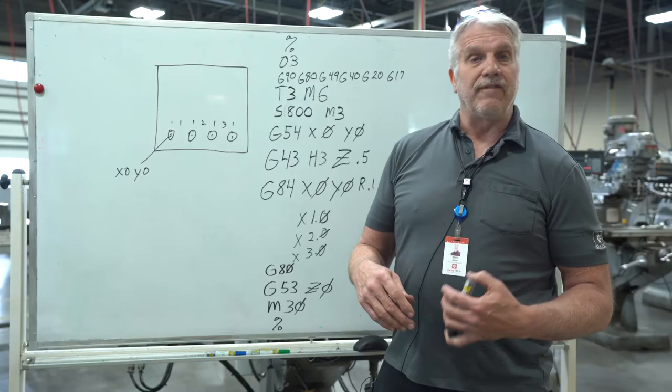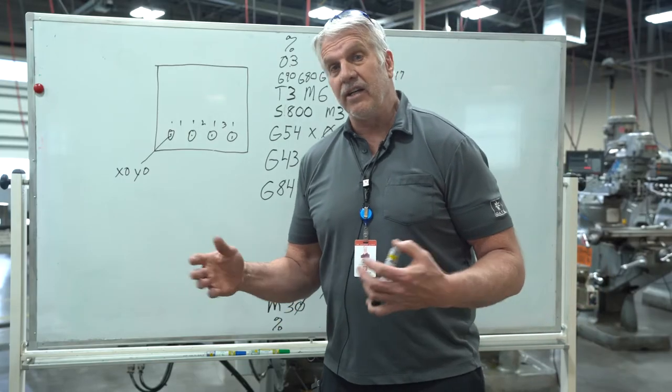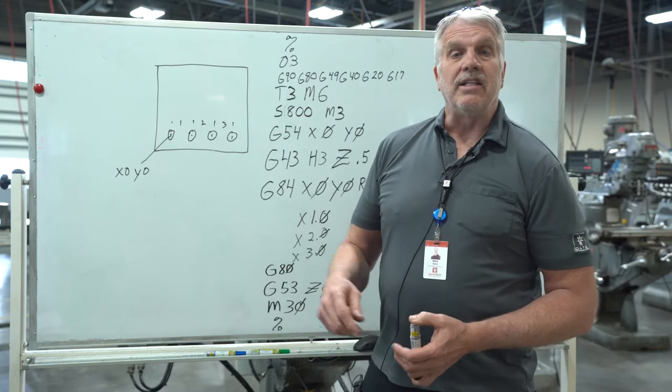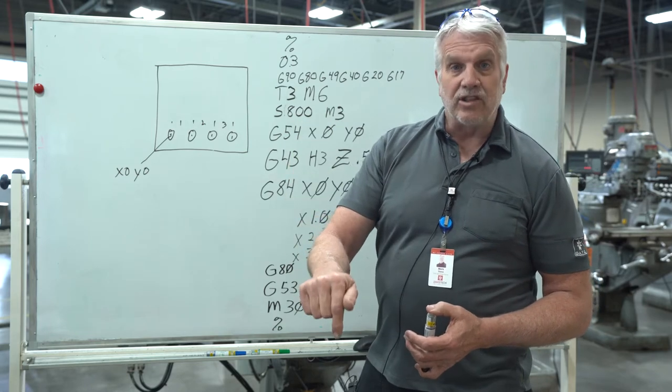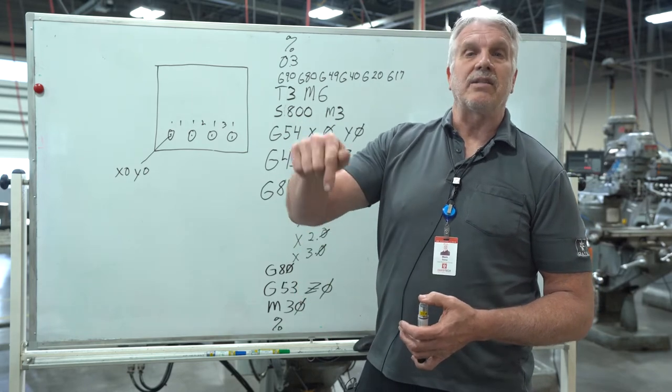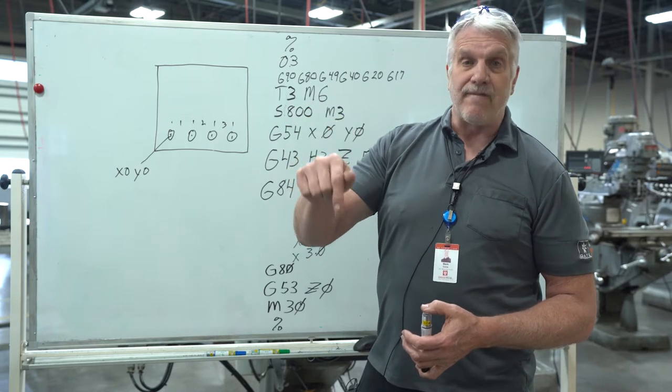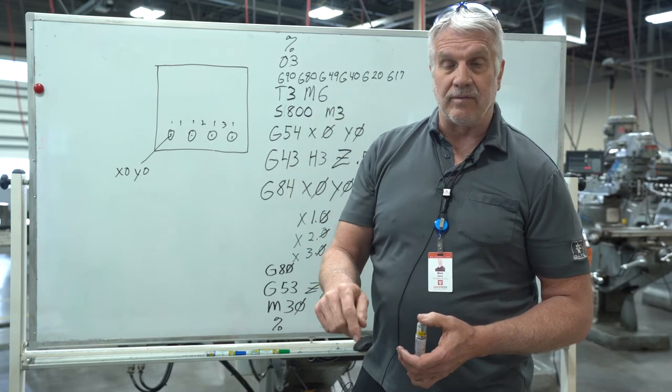What the G85 does different from a G81, a G83, or a G84 is it feeds down, gets to its depth, and then retracts back up at the same feed rate that it fed down.